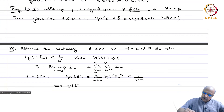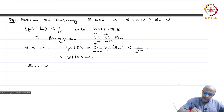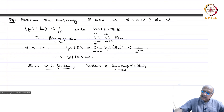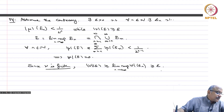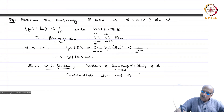On the other hand, E is a lim sup and since nu is finite, nu(E) ≥ lim sup_{n→∞} |nu(E_n)|. This is an exercise we have already done, and since each |nu(E_n)| ≥ epsilon, we get nu(E) ≥ epsilon. Therefore |nu(E)| ≥ epsilon, which contradicts the absolute continuity of nu with respect to mu.